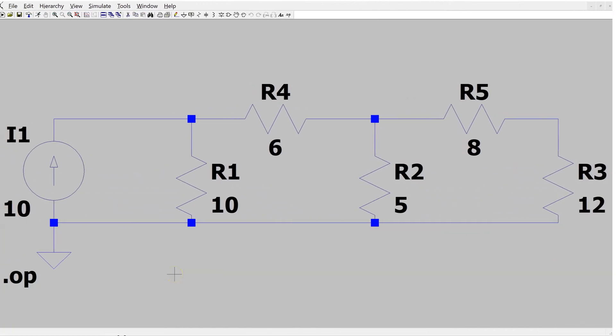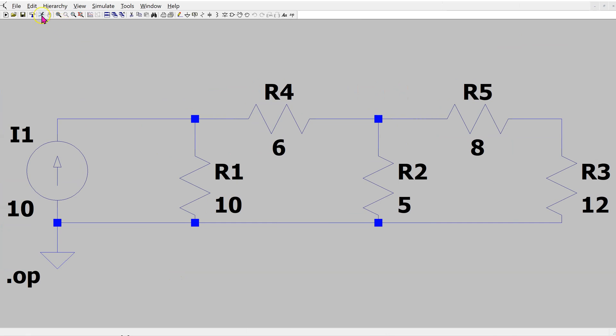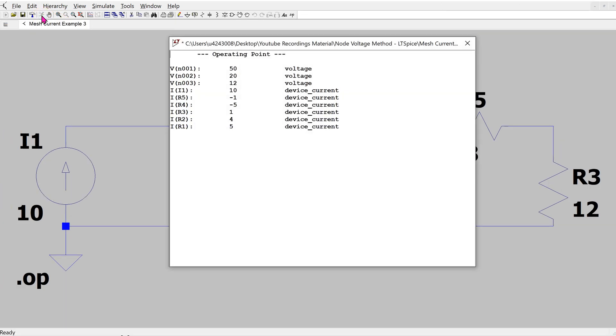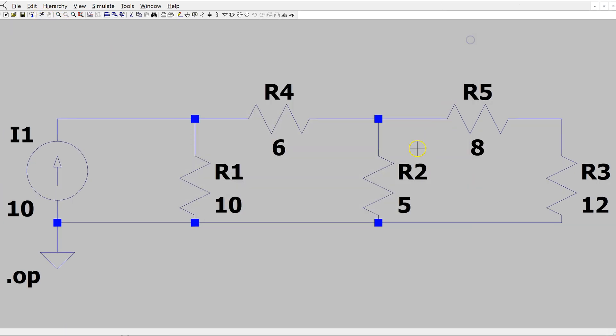We can use LTSpice to verify the solution. We run the simulation and then I hover the cursor over the 5 ohm resistor and we can see that in the bottom left corner, the power dissipation is 80 watts as we calculated. So, this confirms the solution.